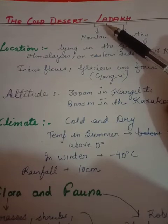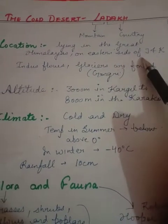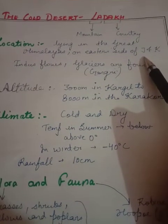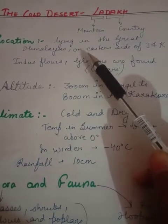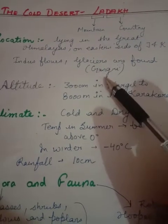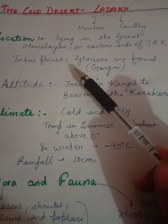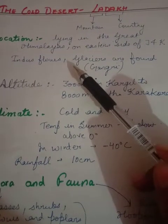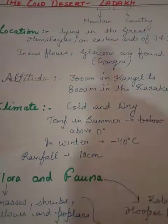Ladakh is a cold desert. It lies in the great Himalayas on the eastern side of Jammu and Kashmir. As it lies in the great Himalayas, it is home to various glaciers like the Gangri Glacier and Siachen Glacier. Rivers also flow through Ladakh, the famous one being the Indus River.